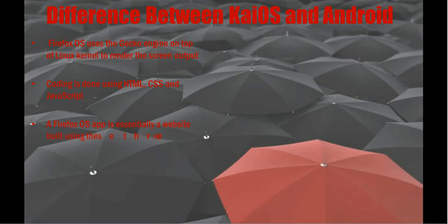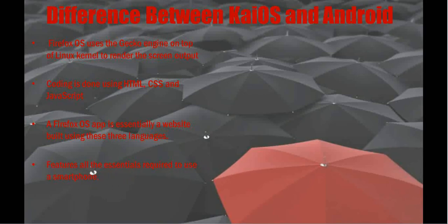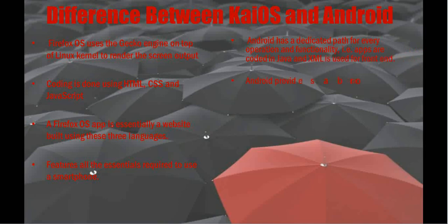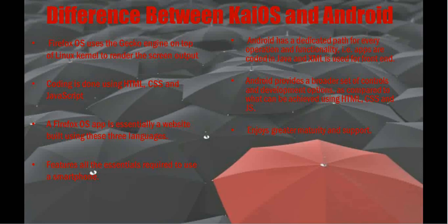A Firefox OS application is essentially a website built using HTML, CSS, and JavaScript, featuring all the essentials required to use a smartphone. On the other hand, Android has a dedicated path for every operation and functionality — applications are coded in Java and XML for front-end. Android provides a broader set of controls and development options compared to what can be achieved using HTML, CSS, and JavaScript, and enjoys greater maturity and support.